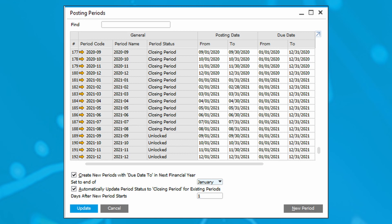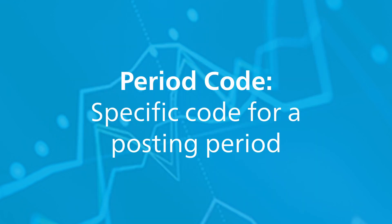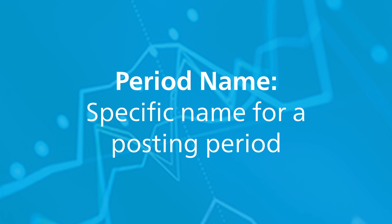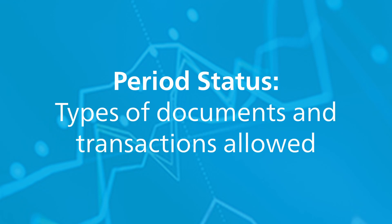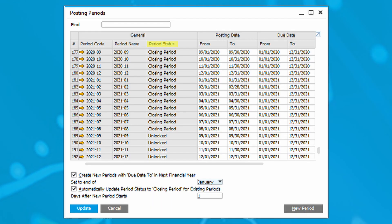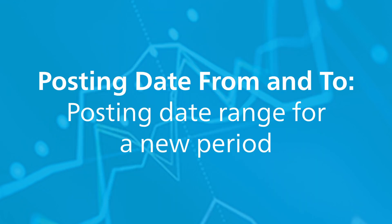Let's walk through the posting periods window. The period code field defines a code for the posting period. The period name field defines the name for the posting period. The period status field is used to indicate the type of documents and transactions allowed in the period. Unlocked refers to all documents and transactions. Unlocked except sales refers to all documents and transactions except documents from the sales AR module. Period closing refers to only documents and transactions from users with authorization to period closing. Locked means that no documents or transactions are allowed.